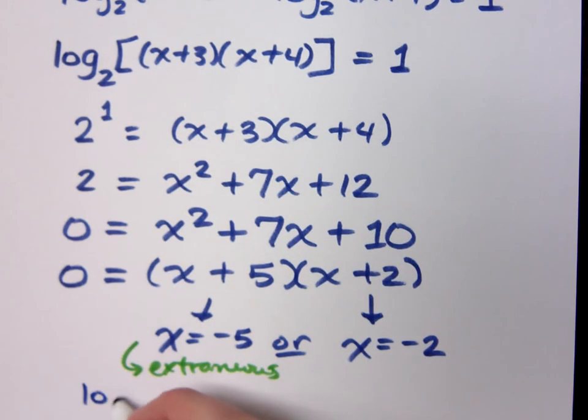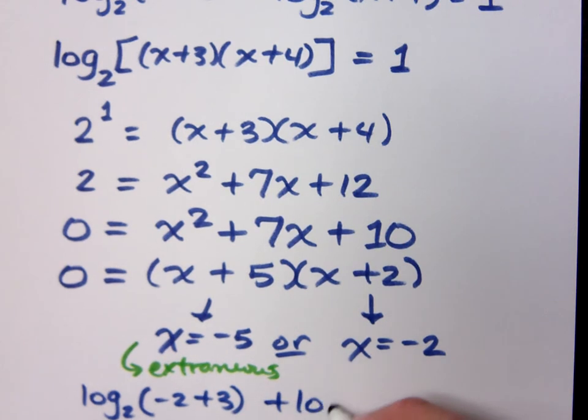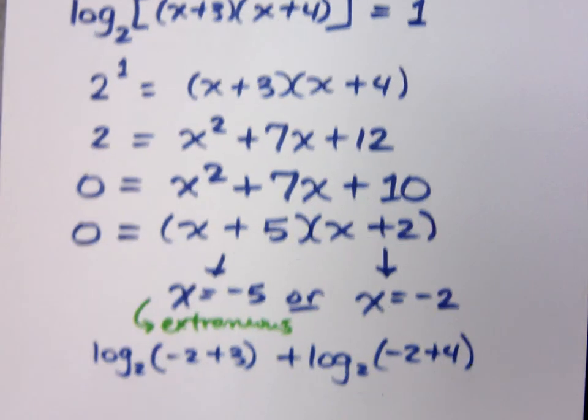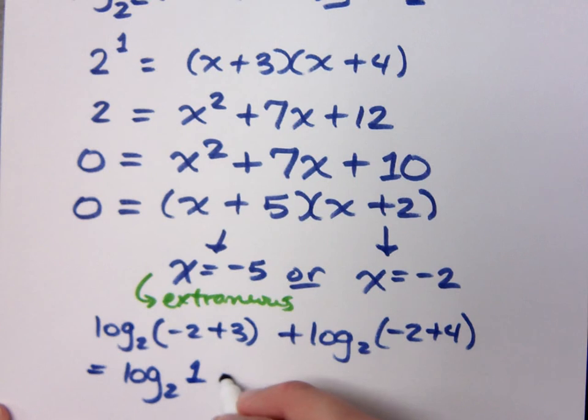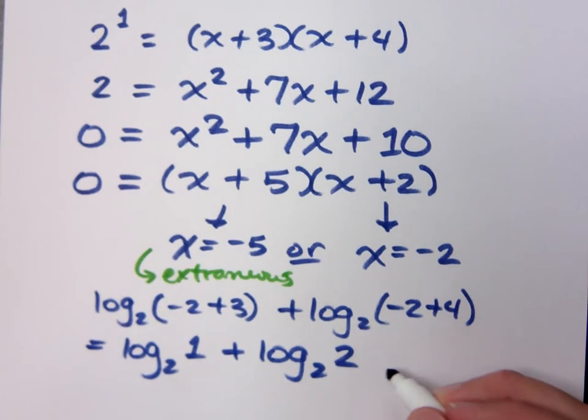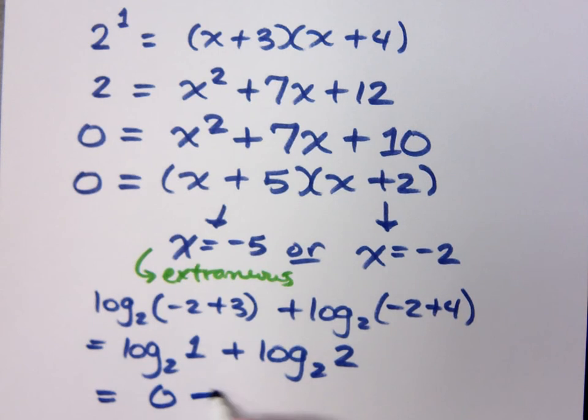So if I check this, if I do log base 2 of negative 2 plus 3 plus log base 2 of negative 2 plus 4, I get log with base 2 of 1 plus log with base 2 of 2. What's log base 2 of 1? 2 to the what gives you 1. 2 to the what gives you 2. I get 1 just like I was looking for.